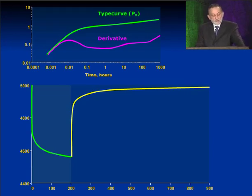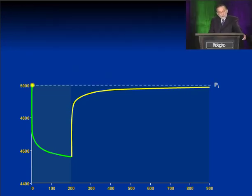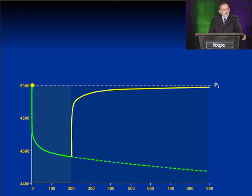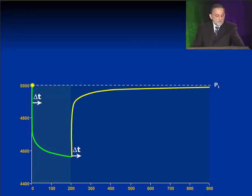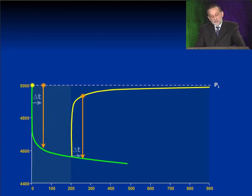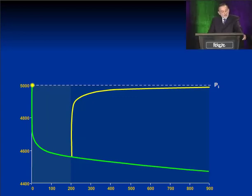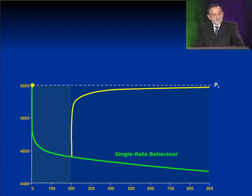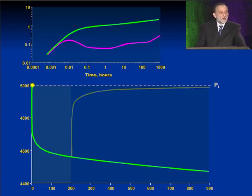How do we do it? There's the data we have. In reality, what we're looking for is the continuation of the first part here — because once we've got this, this is our single rate behavior. What we do is, at any point delta T, go to the drawdown part, determine what the value is, transfer it from the buildup down, and extrapolate all the way to the end. So now I've generated this single rate drawdown behavior. I take this green curve, plot it on log-log paper, take its derivative, and there's my unit rate function. That's deconvolution.